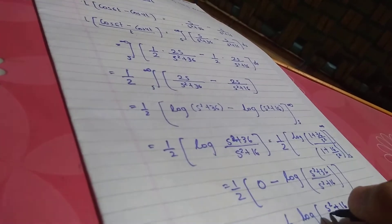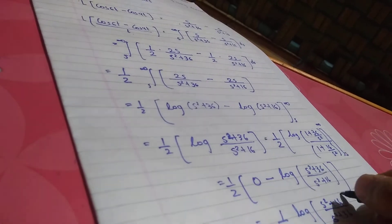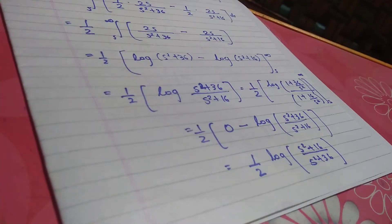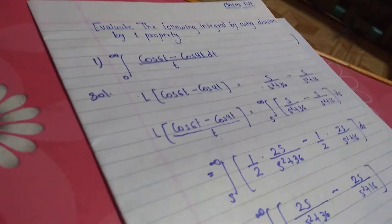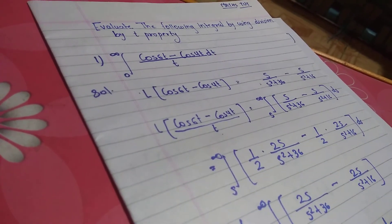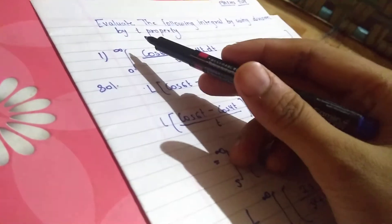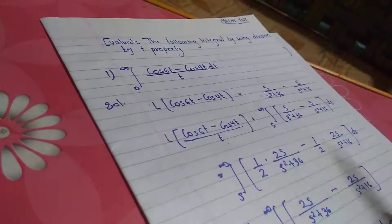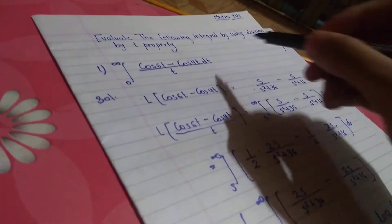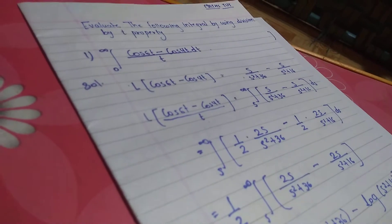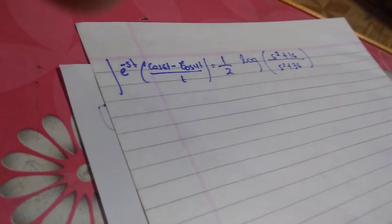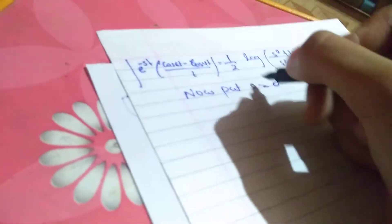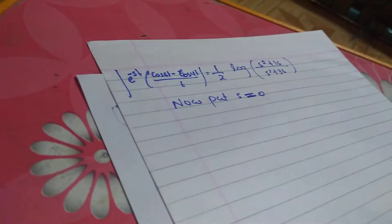Which gives us minus 1/2 log(s² plus 36 over s² plus 16), or equivalently 1/2 log(s² plus 16 over s² plus 36). But since the original question has the integral from 0 to infinity, I also need to put s equals 0. With e raised to minus s times the function evaluated, e raised to 0 is 1, so we substitute s equals 0.